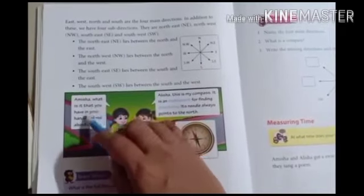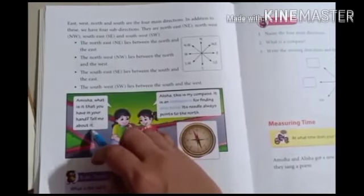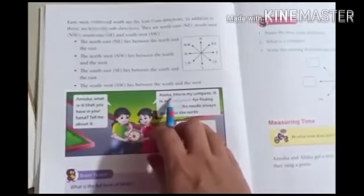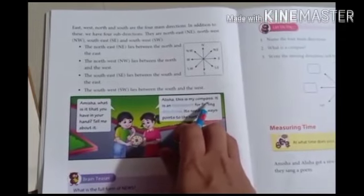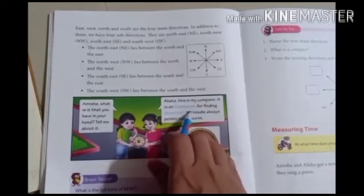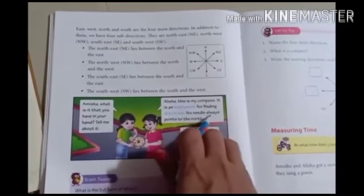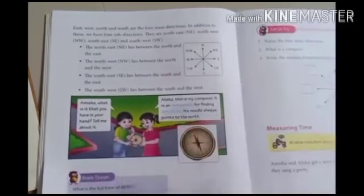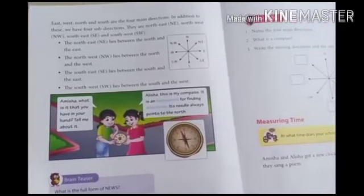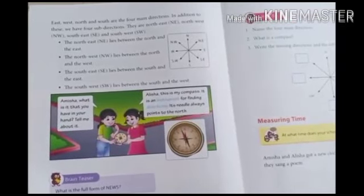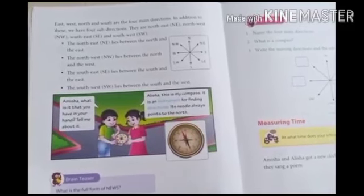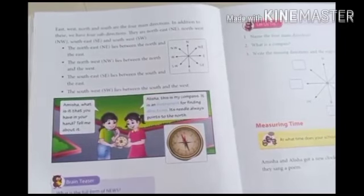Alisha asks Amisha: what is that you have in your hand? Amisha says: this is my compass. A compass is an instrument for finding direction. Its needle always points to the north. Compass ka jo needle hota hai, wo hamesha north ko hi batata hai.